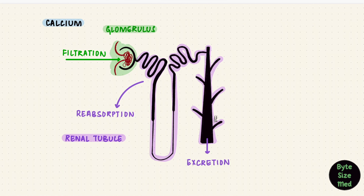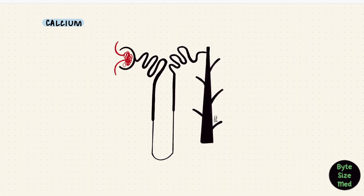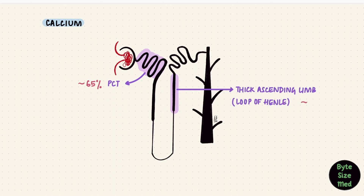Once filtered, where does calcium get reabsorbed? Its pattern is actually similar to sodium. Most of the calcium gets reabsorbed in the proximal tubule, around 65%. The next is in the thick ascending limb of the loop of Henle, that's 25 to 50%. And the last is in the distal convoluted tubule, that's around 8 to 10%, leaving 1% for excretion by the kidney.